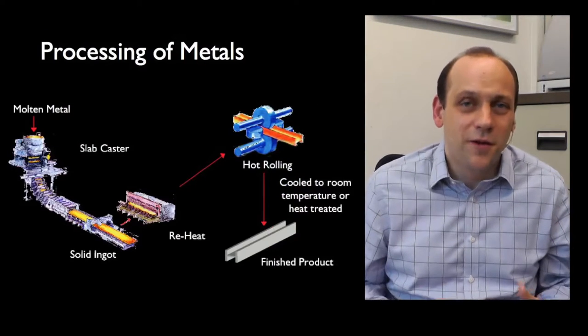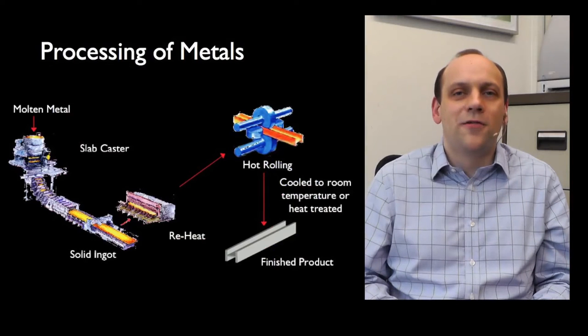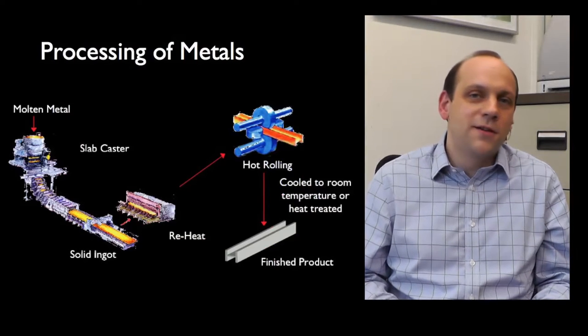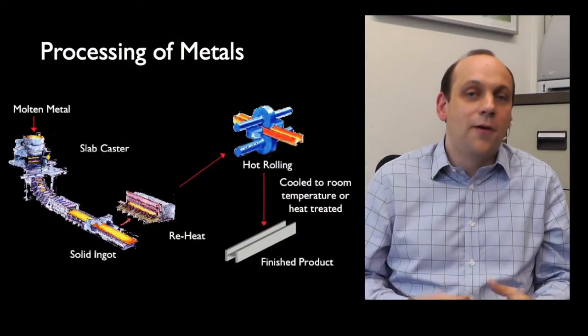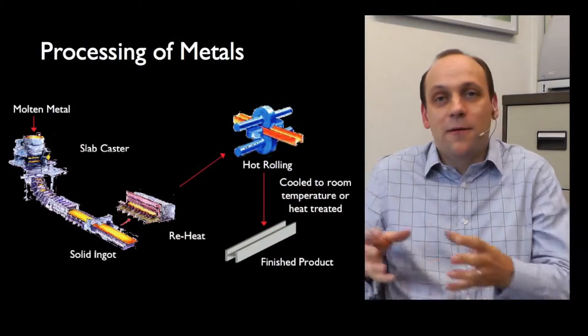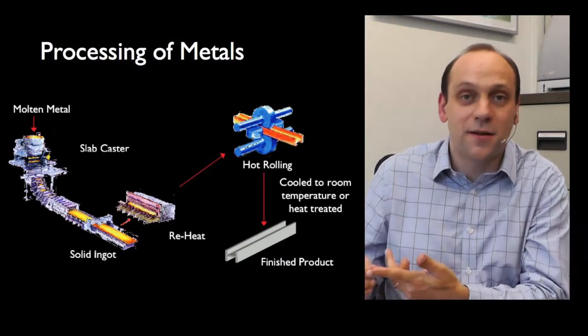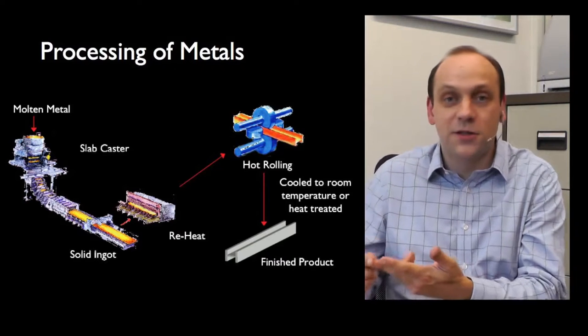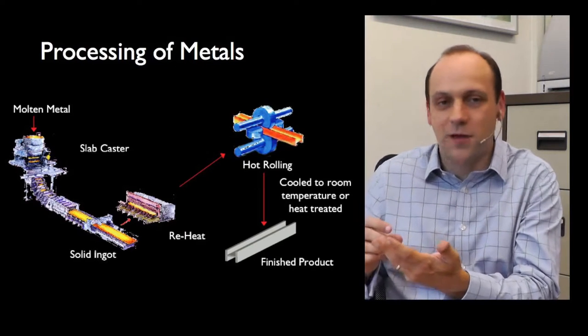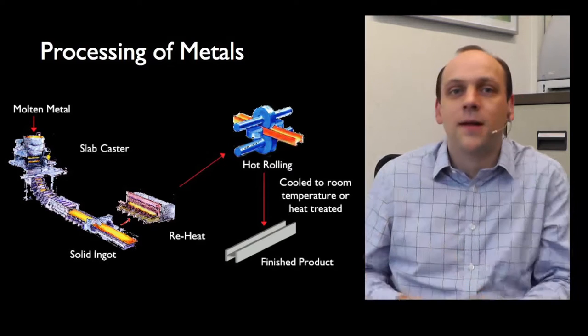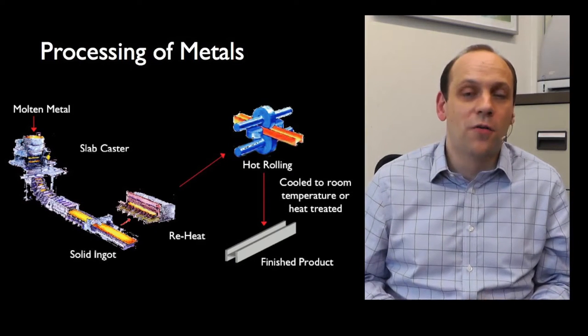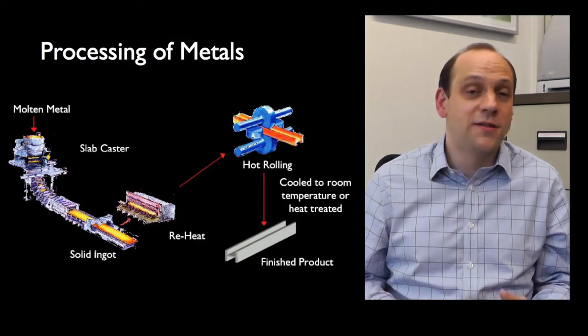What are we trying to do here? We're trying to control the phase assembly we get and therefore the properties we get. That is the phases that are there, the compositions of them, the sizes of them, the arrangement of them. We can control that by the processing we use.